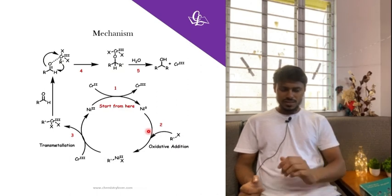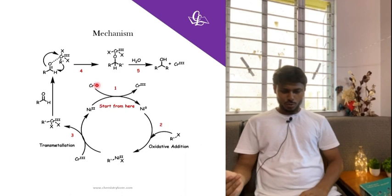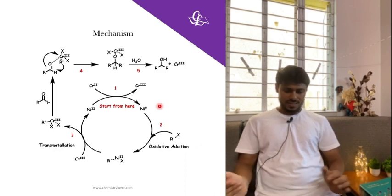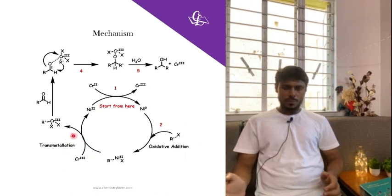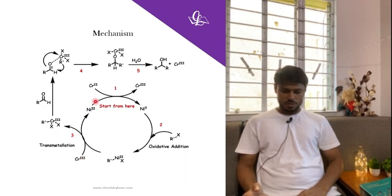Now let's look at the mechanism. The mechanism starts where Ni(II) is reduced to Ni(0) with the help of Cr(II) — so Cr(II) helps reduce Ni(II) to Ni(0). This is a very important step. This Ni(0) undergoes oxidative addition with R-prime-X to give the metal complex. In step three, we have transmetallation or metal exchange, where the R-prime and X groups migrate from Ni(II) to Cr(III).